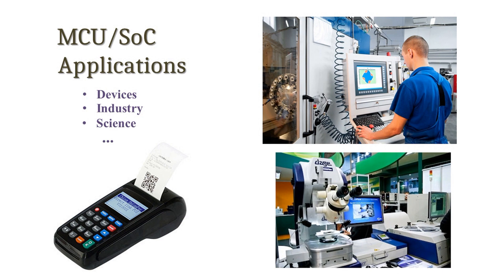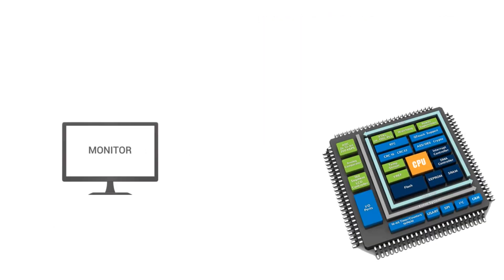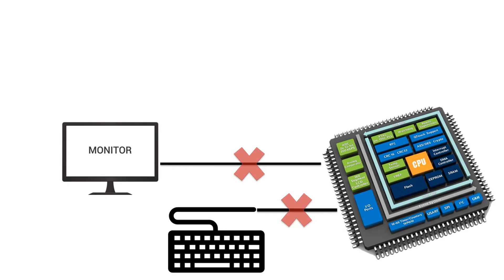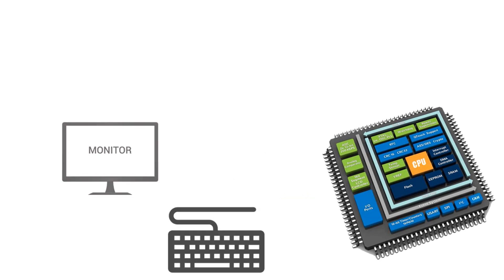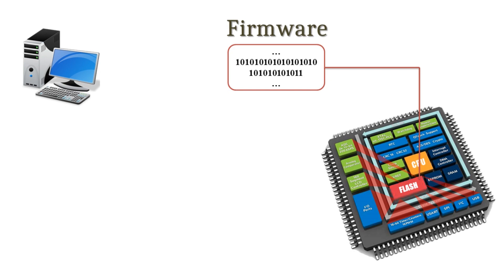MCU and SOC themselves usually lack user-friendly interfaces such as a screen or keyboard. The only way to get full access to a chip's peripherals is to communicate with them through a program written to the chip's internal memory. Such programs are called firmware. Therefore, interacting with a chip's peripherals from a personal computer can occur only via the firmware.